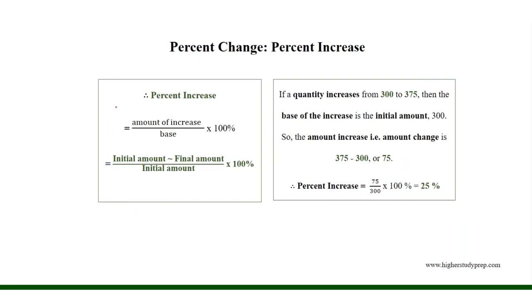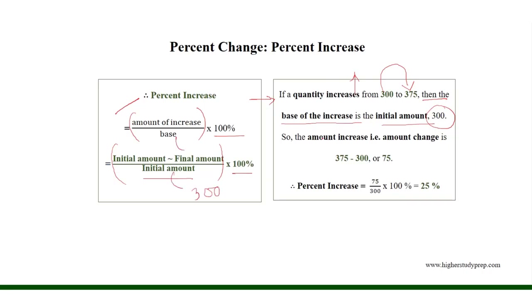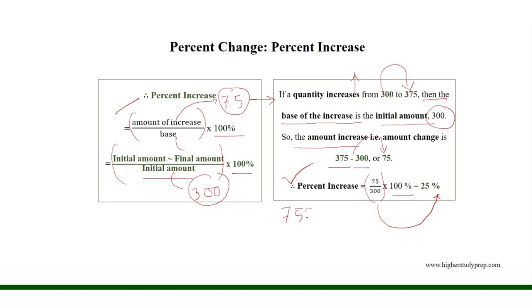The percent increase equals the amount of increase over the base times 100%, which equals the difference between the final amount and the initial amount over the initial amount times 100%. For example, if a quantity increases from 300 to 375, then the base is the initial amount 300, and the amount of increase equals 375 minus 300, which results in 75. Thus, the percent increase equals 75 over 300 times 100%, which results in 25%.